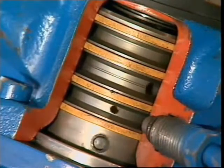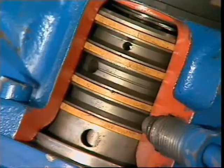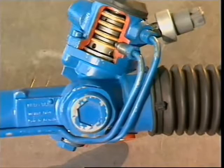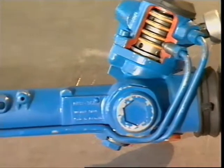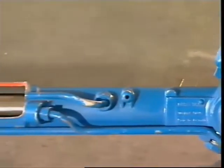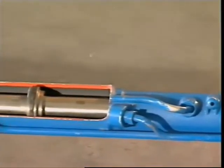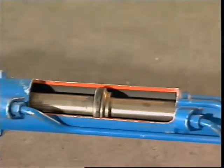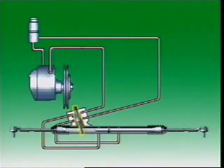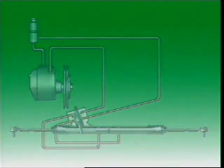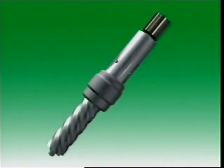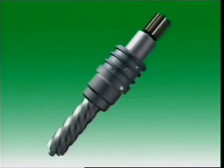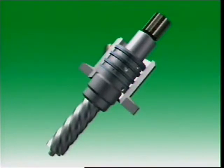Seals in the rotary valve section at the pinion input prevent fluid leakage there. Connecting pipes transfer fluid from the rotary valve housing to one side of the piston or the other to provide assistance which acts directly on the rack. The rotary valve is located between the steering gear input shaft and the pinion gear. It consists of an inner member which forms part of the input shaft and a surrounding sleeve member fixed to the pinion gear.